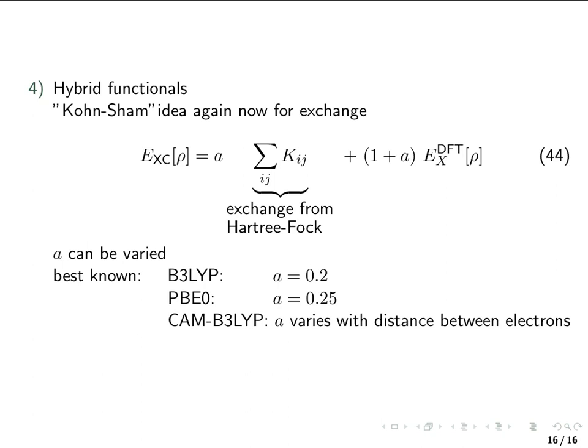At the end, maybe I should also mention a fifth type of functional, which is called so-called double-hybrid functionals, which in a way do that again, but now they include also some MP2-like contribution to the functionals. However, the disadvantage of those functionals, of course, is that evaluating those functionals is quite expensive.